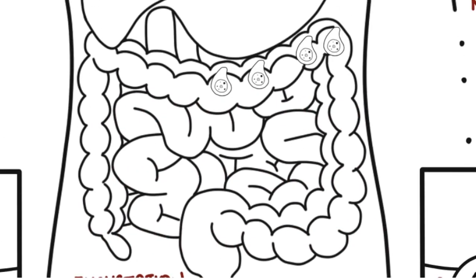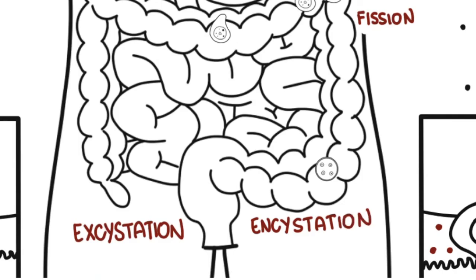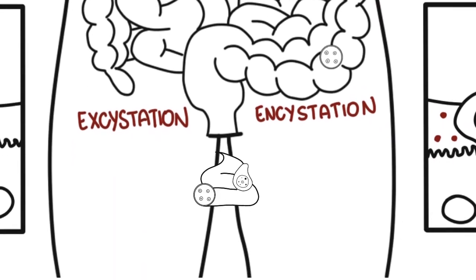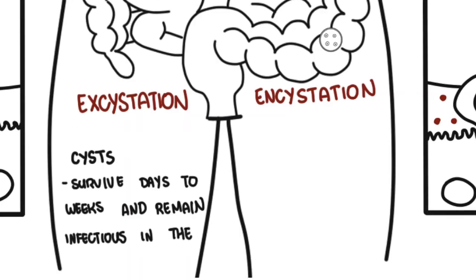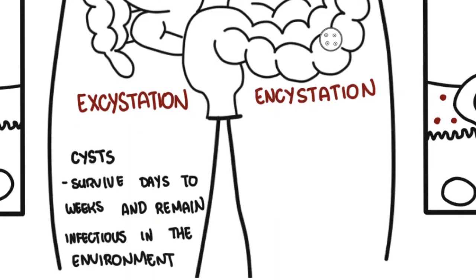In the large intestine, the trophozoites multiply by binary fission and produce cysts, termed encystment, and both stages are passed in the feces. Cysts can survive days to weeks in the external environment and remain infectious due to the protective coating it has.